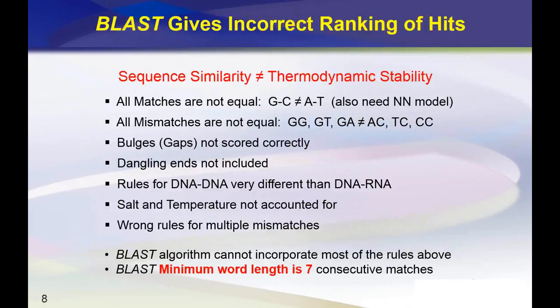Sequence similarity is not the same as thermodynamic stability. BLAST scores all sequence matches the same — an A match is treated the same as C, G, or T. But in thermodynamics, GC base pairs are much more stable than AT base pairs, and you really need a nearest neighbor model to accurately predict hybridization.